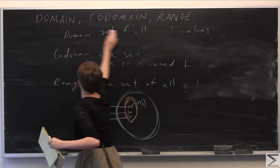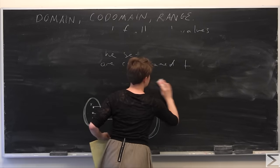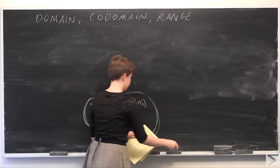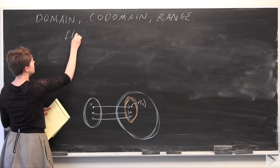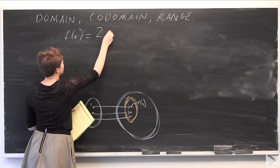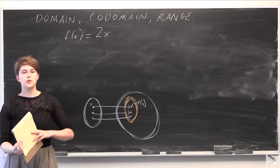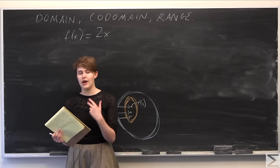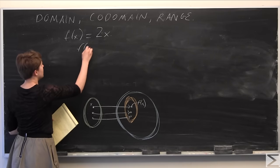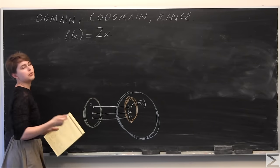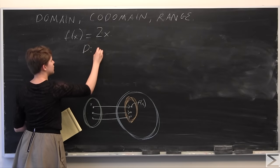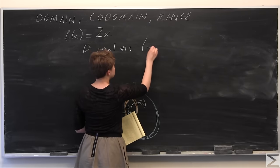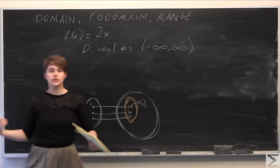So I'm going to go through a couple of simple examples. Our first example: let f of x equal 2x. We'll go one at a time and identify first the domain, then the codomain, and then the range. The domain of f of x = 2x — because we haven't already established a domain — is just going to be the real numbers, negative infinity to infinity, because you can plug anything in for x.